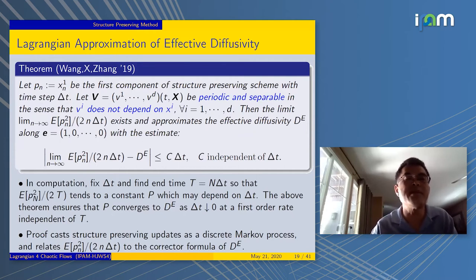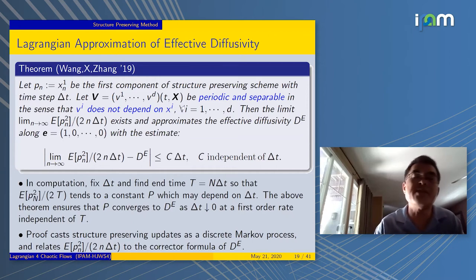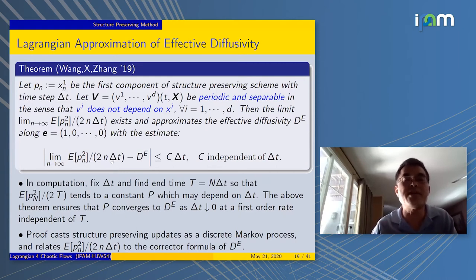We will see that this method of discretization is much better than the Euler. For a simple reason that the volume of the physical flow is preserved. Here's our main result: if we let p_n be the first component, suppose we want to get the effective diffusivity in x_1 direction. Then if you follow the scheme, we consider the case that v is periodic and separable in the sense that v_i does not depend on x_i.